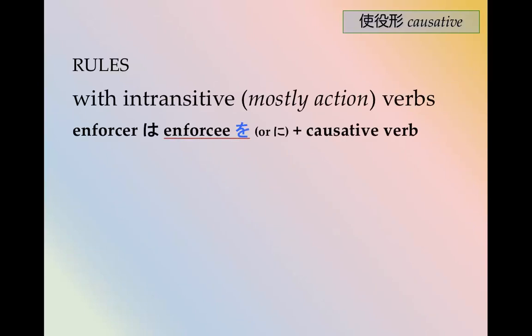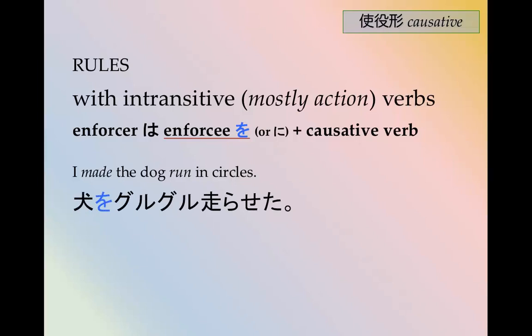With intransitive verbs, the enforcee is usually marked by を. If you put に there instead, it doesn't seem grammatically wrong, but を is more common. For example: I made the dog run in circles. To run is 走る, a u-verb, so the causative is 走らせる。 犬をぐるぐる走らせた。